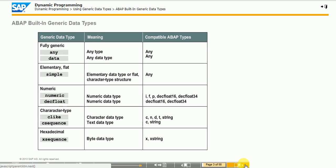The figure illustrates the predefined generic data types supported by ABAP syntax. In addition to complete data types, ABAP also features a number of generic data types. In contrast to complete types, you cannot use generic types to define the properties of data objects.